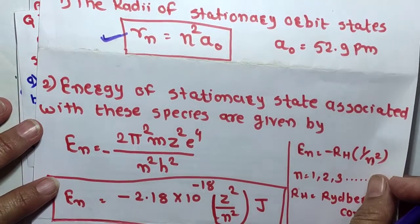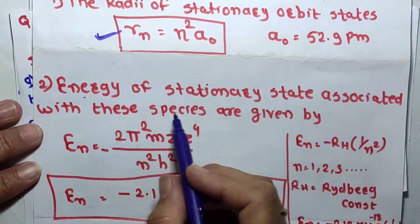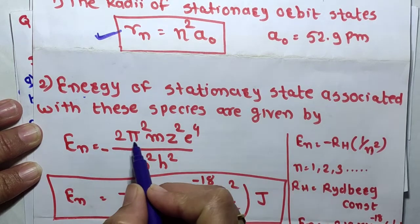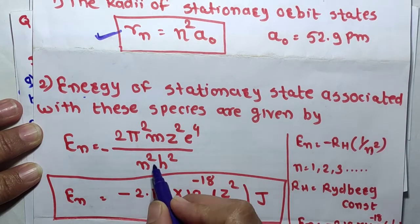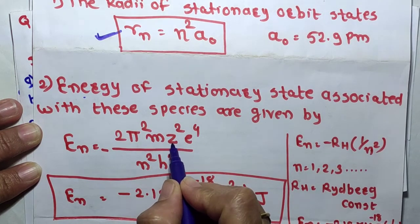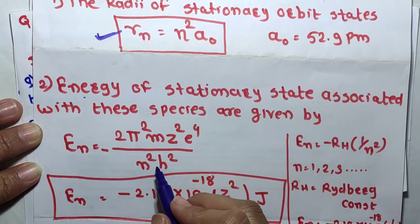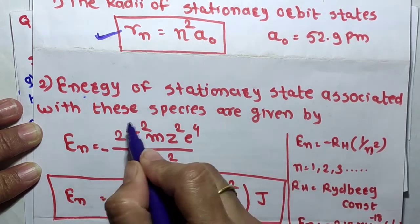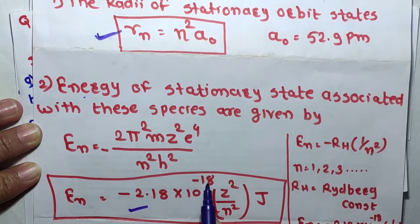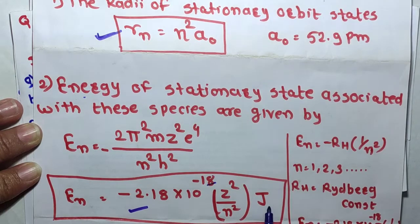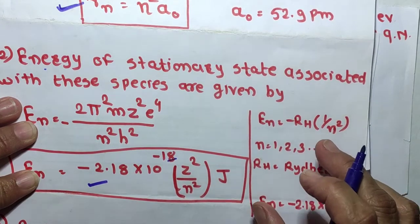If we want to find out the energy of these stationary orbits, the energy of stationary states is given by: En = (2π²me⁴Z²) / (n²h²), where m is the mass of electron, Z is the atomic number, e is the charge on electron, h is Planck's constant, and n is the orbit number. Substituting all values, this formula gives: En = −2.18 × 10⁻¹⁸ × Z²/n² joules.